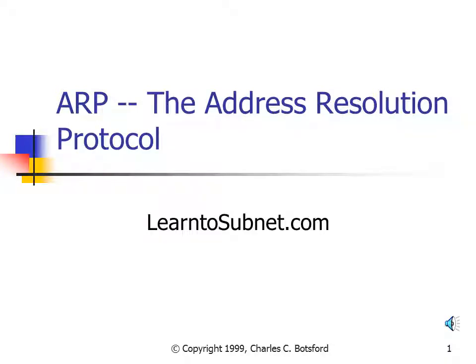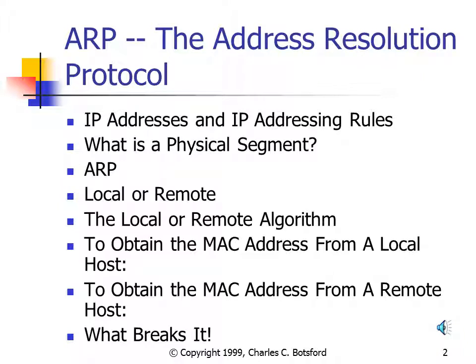ARP, the Address Resolution Protocol. In this Address Resolution Protocol section, we're going to first talk about IP addresses and some IP addressing rules. We'll talk about what a physical segment is, and then we'll talk about the Address Resolution Protocol itself. We'll talk about the difference between local and remote hosts, how the local and remote algorithm works, how a source computer obtains the MAC address when communicating with a local host or a remote host, and what breaks the Address Resolution Protocol.